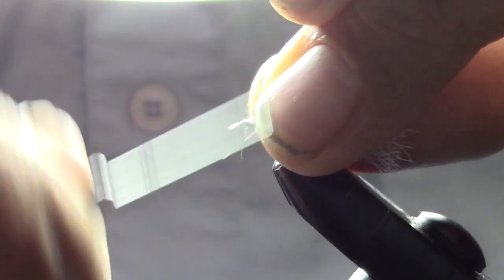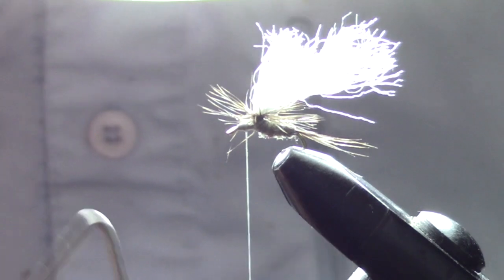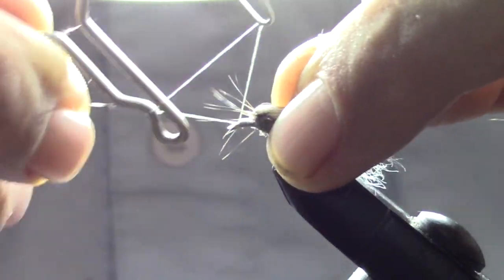Then fix it and trim it off. We're going to run our thread back up to the eye and build up a nice little head body there. We're going to whip finish right behind the eye.